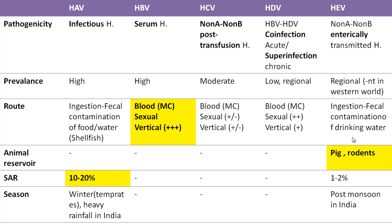For example, hepatitis E virus is very rare in western countries. Regarding routes of transmission, hepatitis A and E are transmitted by ingestion of food and water contaminated by fecal material. Hepatitis B, C, and D are transmitted by blood, sexual route, or from mother to fetus — vertical transmission. The risk of perinatal transmission is highest with hepatitis B, followed by D and C.